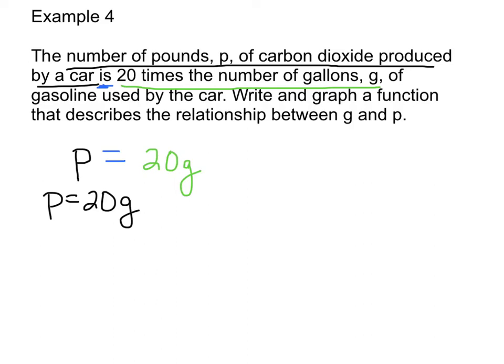We now need to graph this. I'm going to make a t-table. We normally would use X and Y, but we're using G and P. G is the input, P is the output. G stands for the number of gallons. What's the least number of gallons you can have in your car? It'd be zero. I'm just going to use zero, one, and two. If you plug in zero, that would give you 20 times zero, which is zero. Plug in one, 20 times one is 20. 20 times two is 40. Three times 20 would give you 60, and it keeps going.